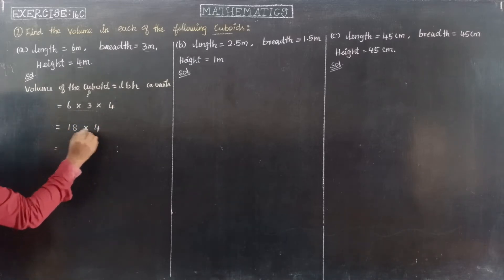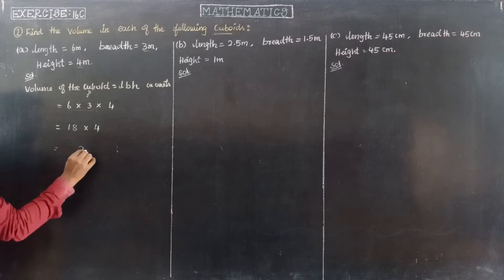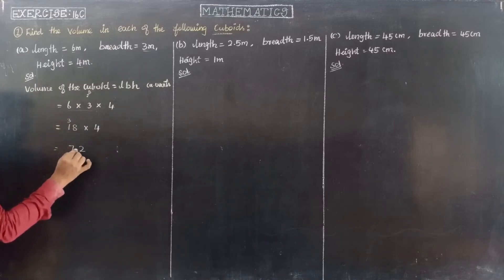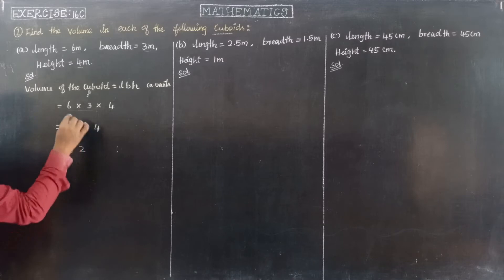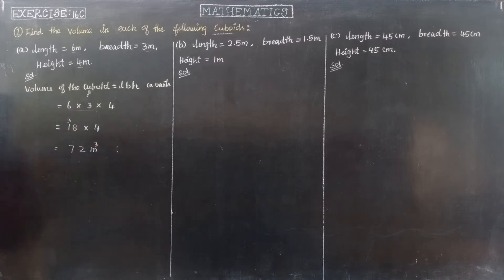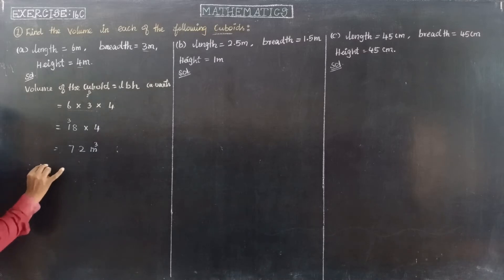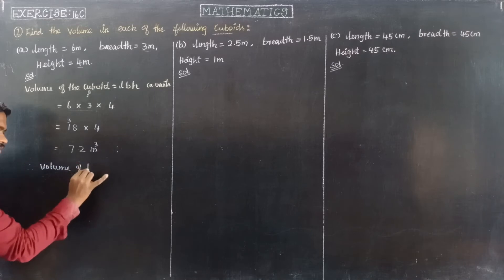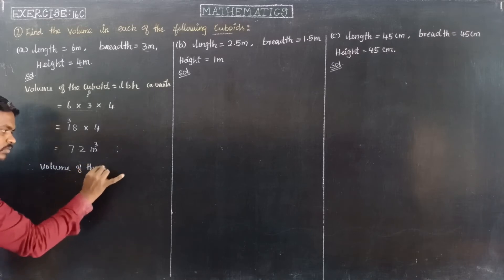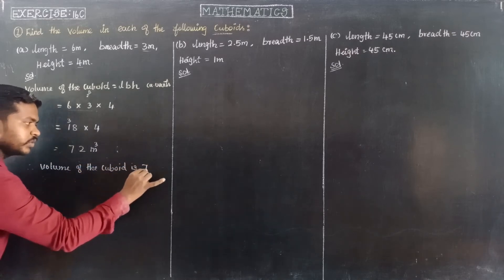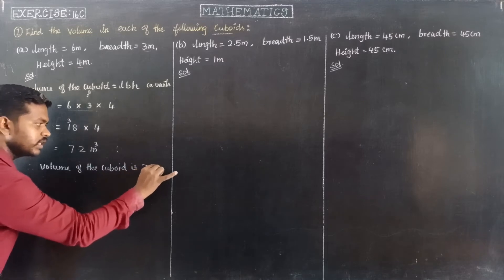So, multiply the formula. 4 times 8 is 32, remaining 3. 4 times 1 is 4. 4 plus 3 is 7. So, 72 meter cube. Therefore, value of the cuboid is 72 meter cube.